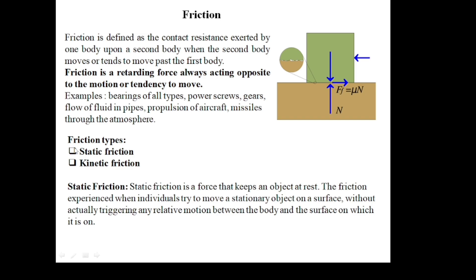There are two types of friction: static friction and kinetic friction. Static friction is a force that keeps an object at rest. It is the friction experienced when one tries to move a stationary object without actually triggering any relative motion between the body and the surface. For example, if we apply a force on an object but it does not move, static friction is acting.